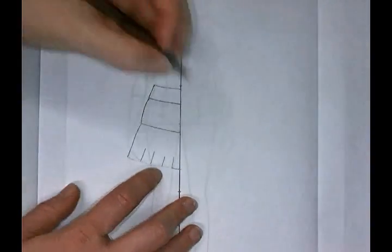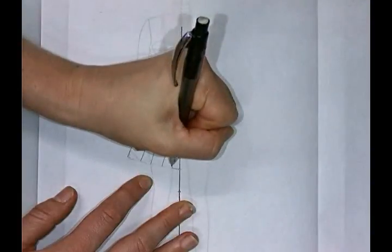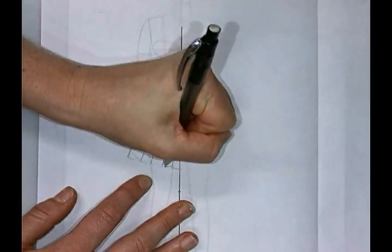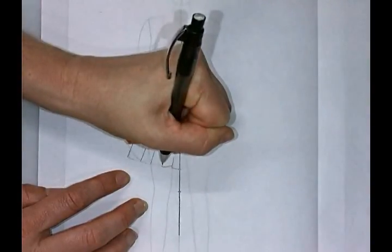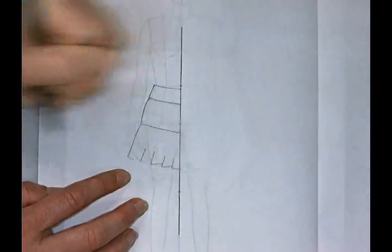So the first one just follows my original line. The second fullness starts a bit higher and then moves down to the skirt shape that was originally drawn.